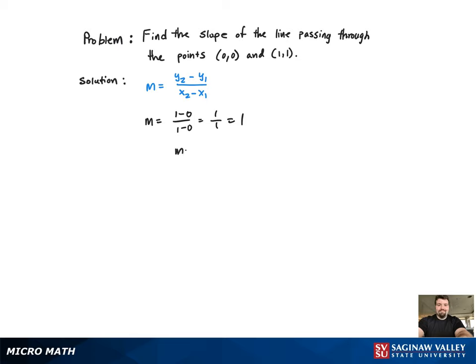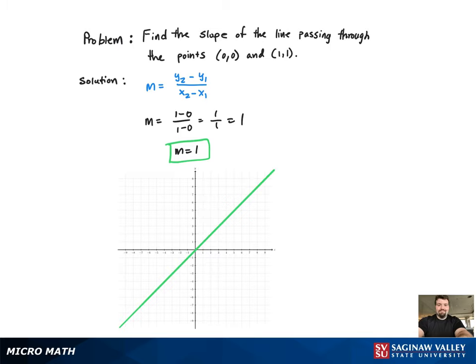We go in order: (0, 0) is point one, (1, 1) is point two. Solve for m — m equals 1. That's it. And there's the graph.